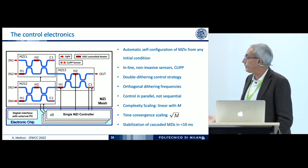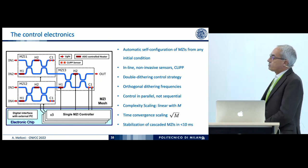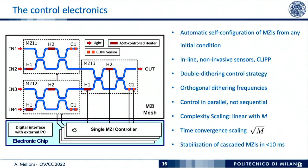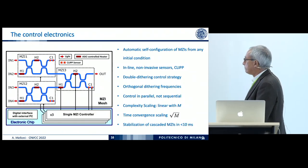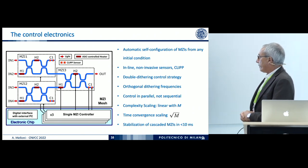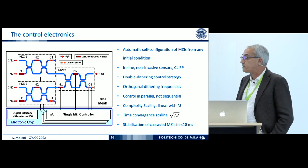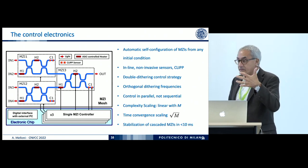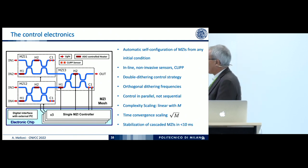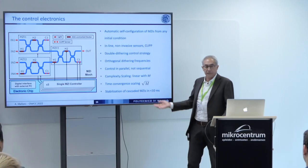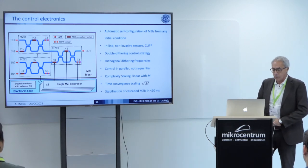The scaling is linear in terms of number of controller devices, but the complexity does not increase because everything is exactly the same and all stages work at the same time. The maximum we have reached is 16 grating couplers — 16 antennas — so 15 Mach-Zehnder stages, and stabilization is done on the order of 10 milliseconds, which is pretty fast.